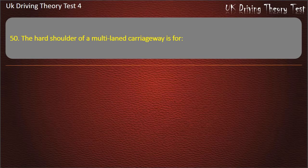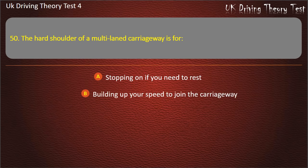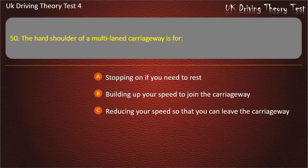Question 50. The hard shoulder of a multi-laned carriageway is for: stopping if you need to rest; building up your speed to join the carriageway; reducing your speed so you can leave the carriageway; or stopping in an emergency. Answer: Stopping in an emergency.